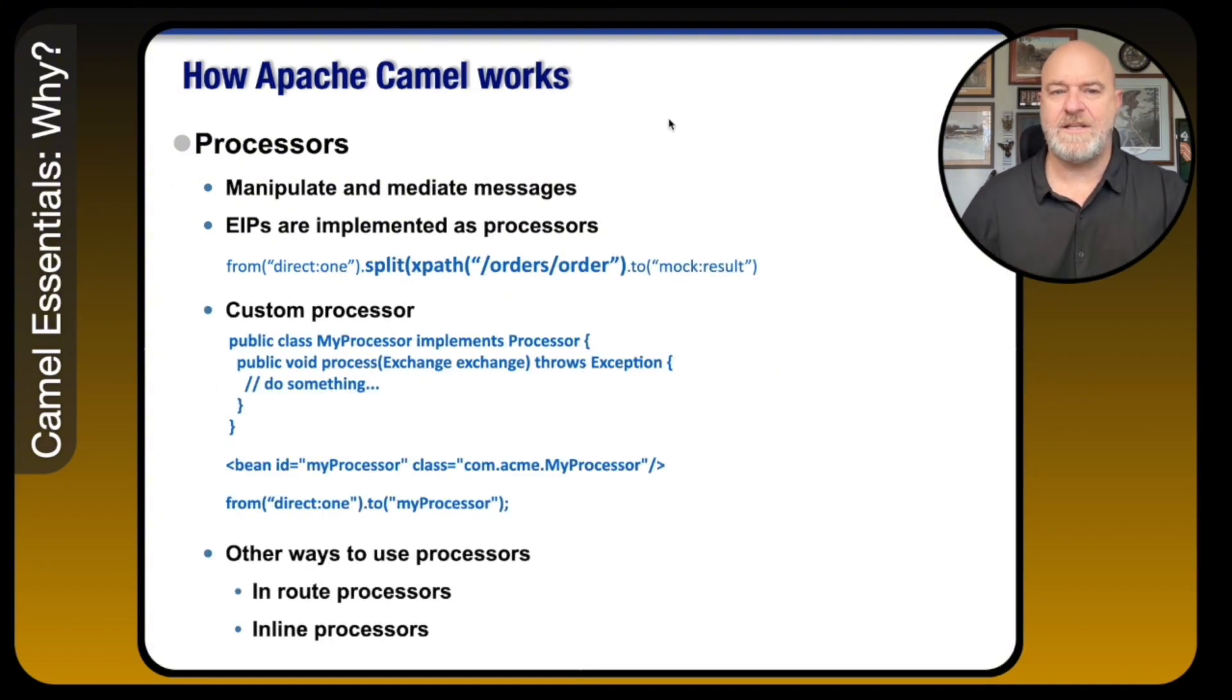Now, if we were going to set up like processors, things that allow you to add your own code. So there are EIPs that are implemented as processors. In this case, we have a split that takes XPath and then you're basically splitting on that XPath. So you can see again, the power of this, you have a from direct one. Now we're going to take whatever's coming in and I'm guessing it's going to be XML of some sort. And we're going to now split that and send each individual message for what we're splitting on out to the mock result endpoint. So you can see how simple this is, split whatever the message body is. We're going to use XPath to split it based on each individual order.